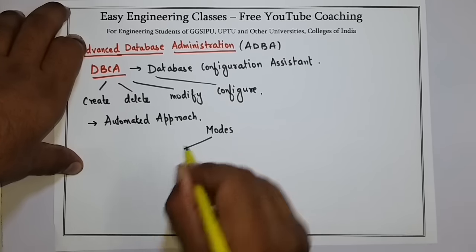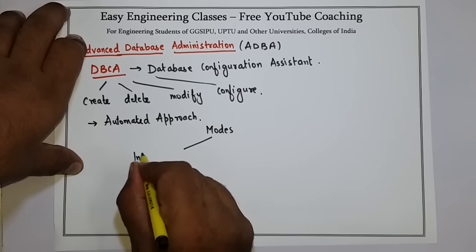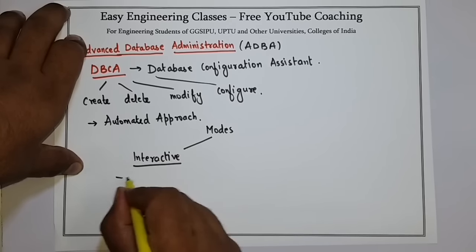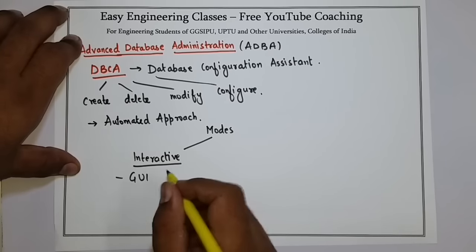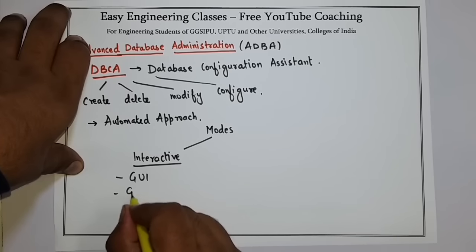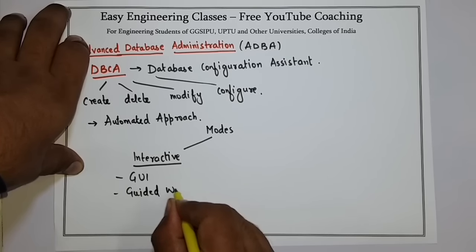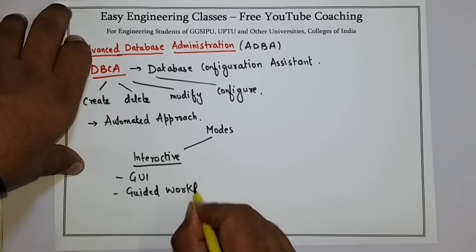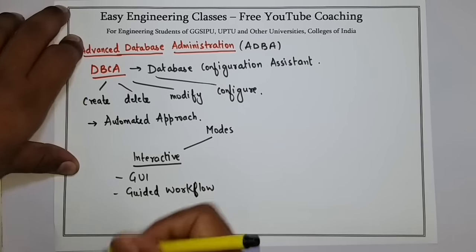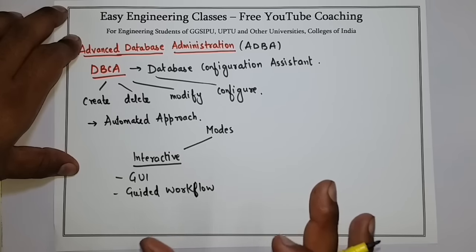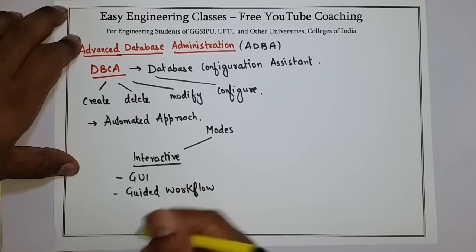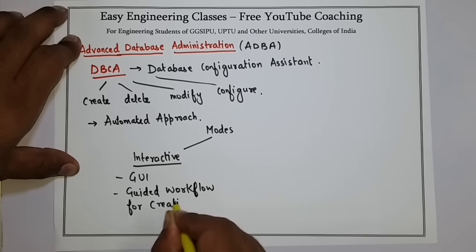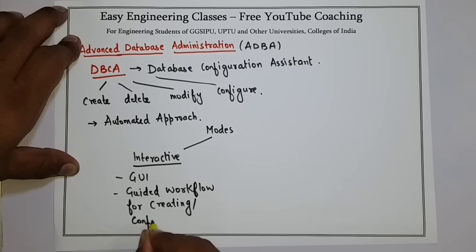The first mode is interactive mode. As the name suggests, it is a GUI-based mode of using DBCA. It comes with a guided workflow for creating and configuring a database. Guided workflow means all the steps are predefined in the form of windows — you just have to select the correct option and click the Next button to complete the process.